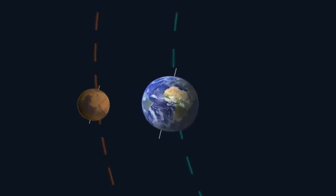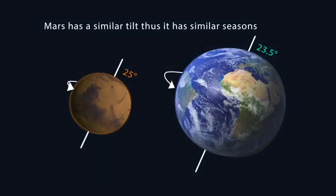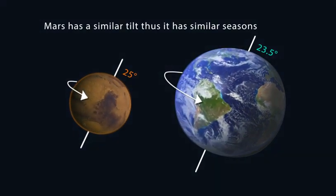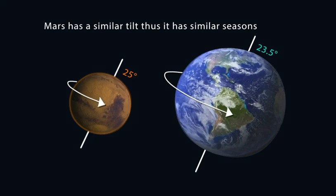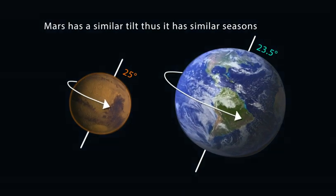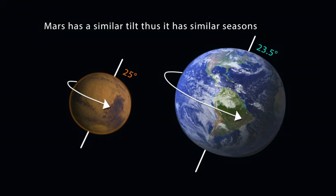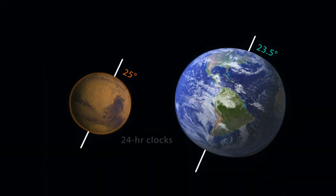Mars and Earth have similar tilts. This means that both Earth and Mars experience winter, spring, summer, and fall. But since Mars is further from the Sun, its seasons are all much colder than those on Earth.